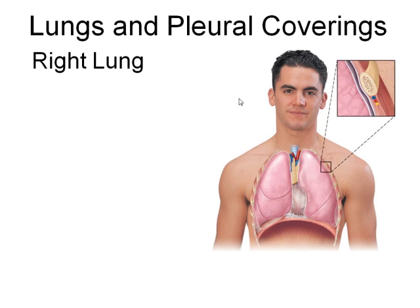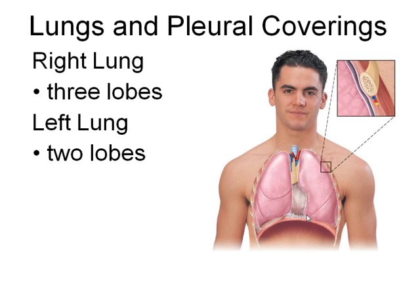The right lung has three lobes — right upper (RUL), right middle (RML), and right lower (RLL) — while the left lung has only two lobes, left upper (LUL) and left lower (LLL), because the heart occupies about two-thirds of the left side of the body.